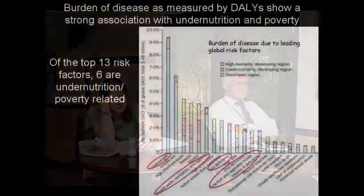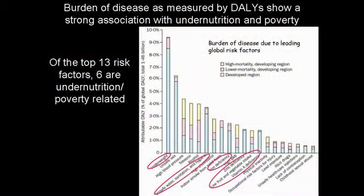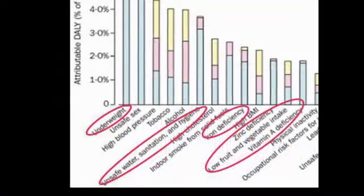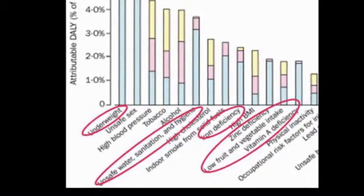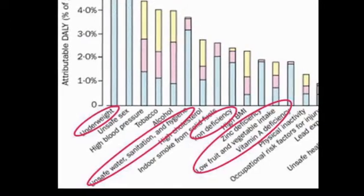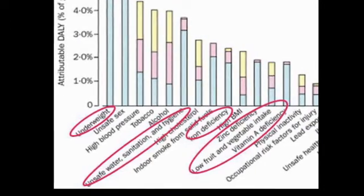We can measure the burden of disease by the DALY — Disability Adjusted Life Years. If you look across, you'll see that the major one of all is underweight. If you keep adding them up, you'll find that six of the top 13 factors are associated with undernutrition and poverty. I think you need to appreciate how I measure nutrition, which may not be the same as you perceive it — so I'm laying down the ground rules of how I go about measuring it.